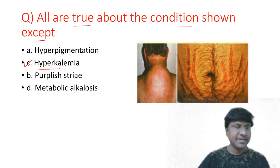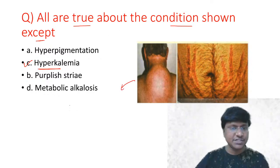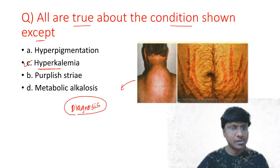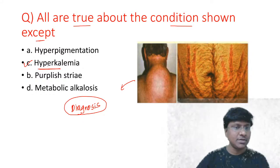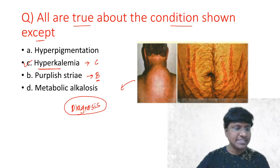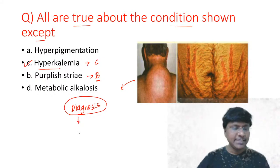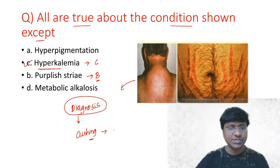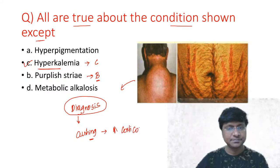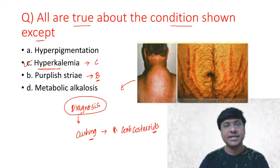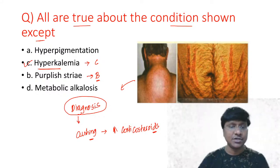The diagnosis in this patient is Cushing's syndrome. In patients with Cushing's, there will be an increase in corticosteroids. The important point is that when corticosteroid levels are increased, their action is similar to that of aldosterone.